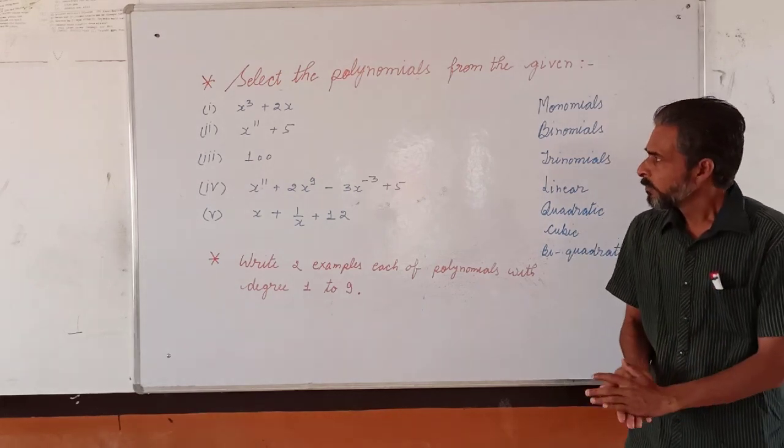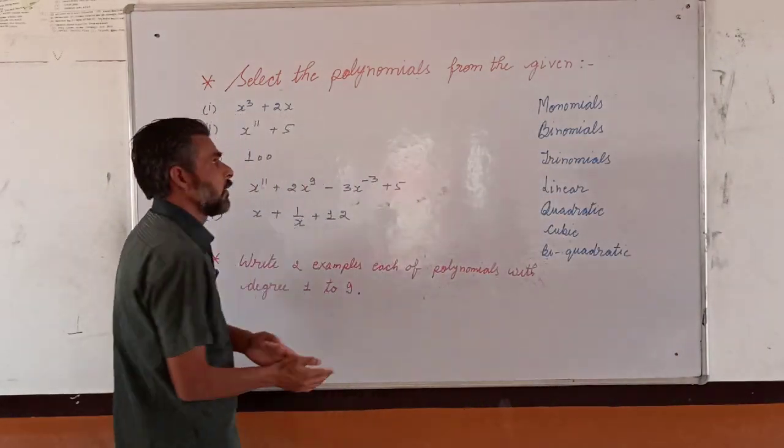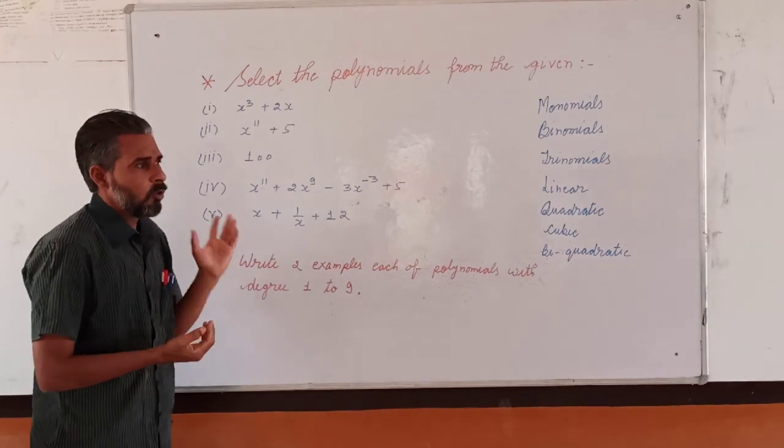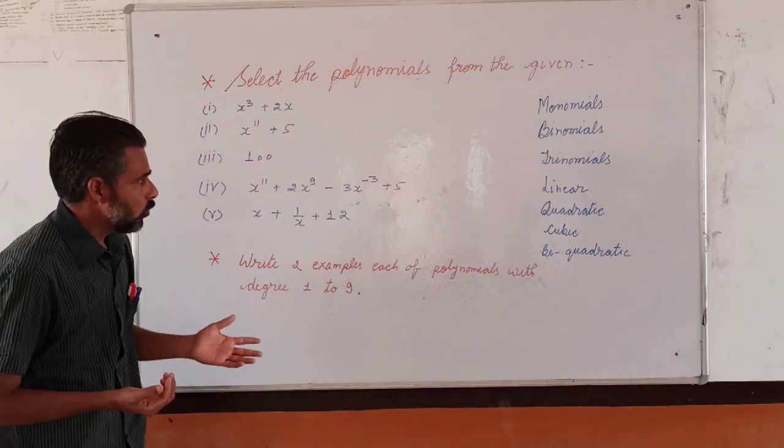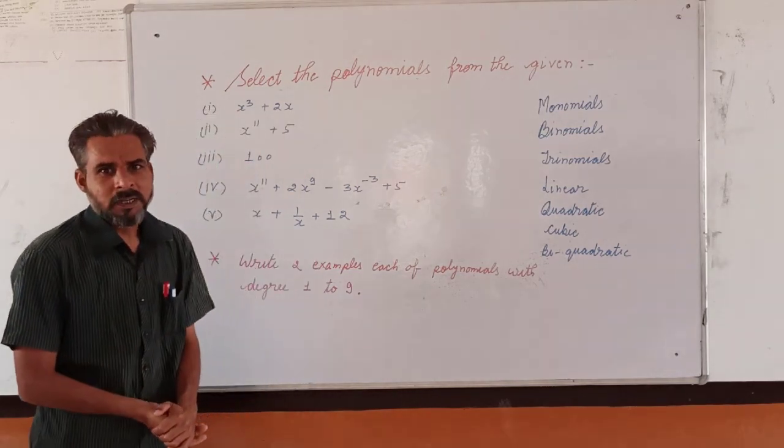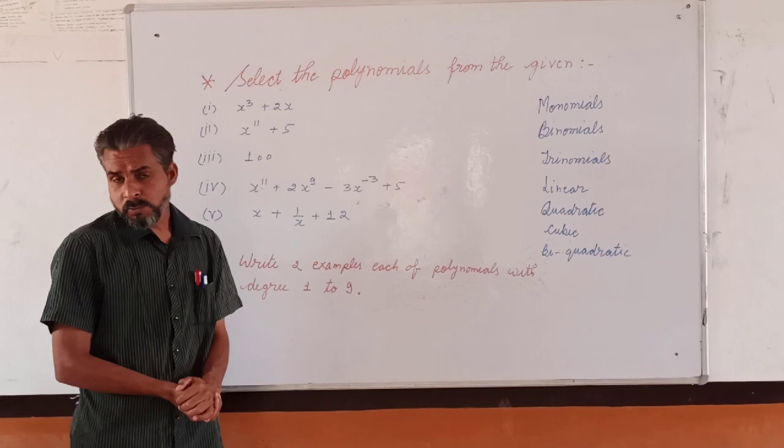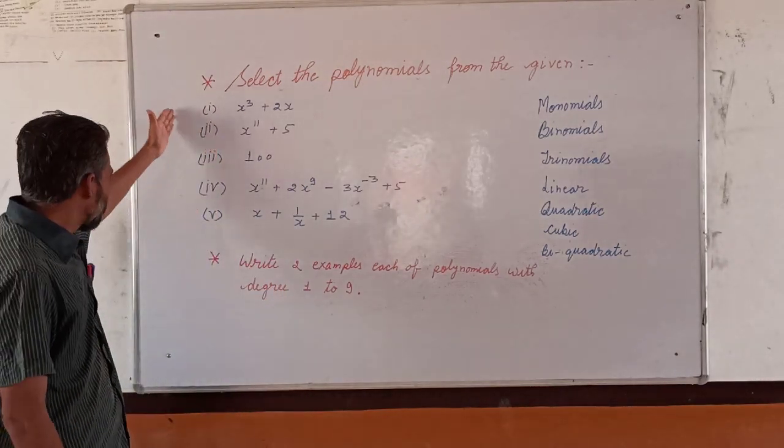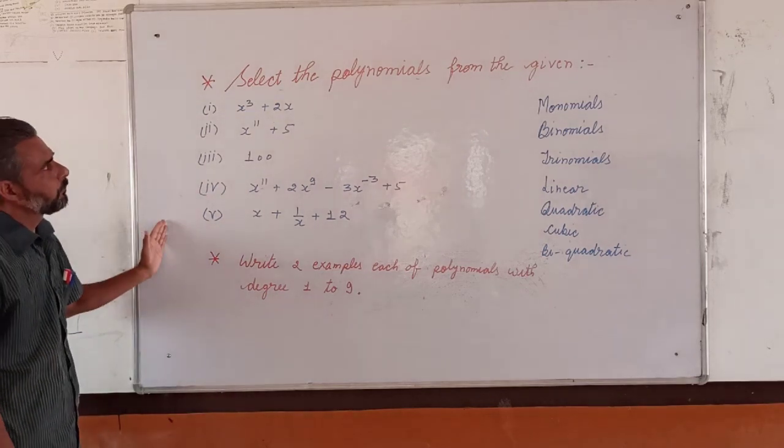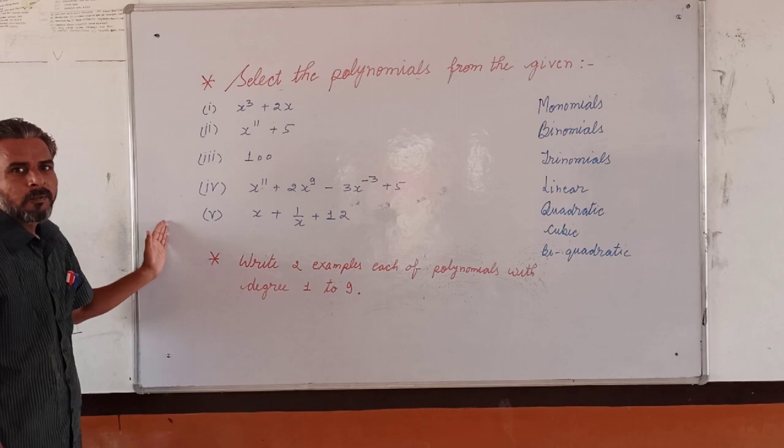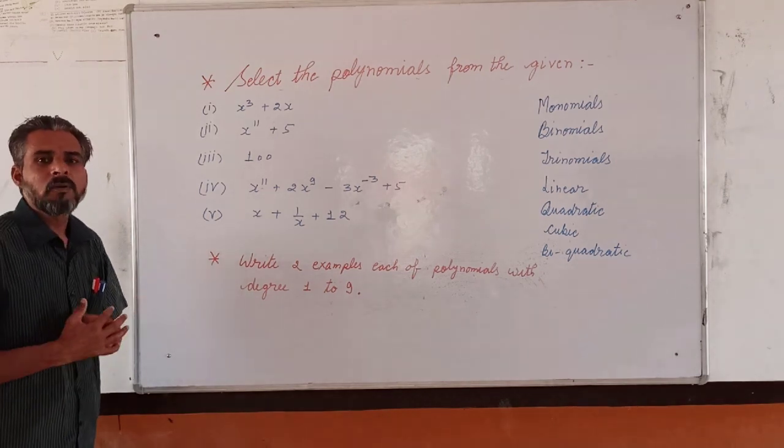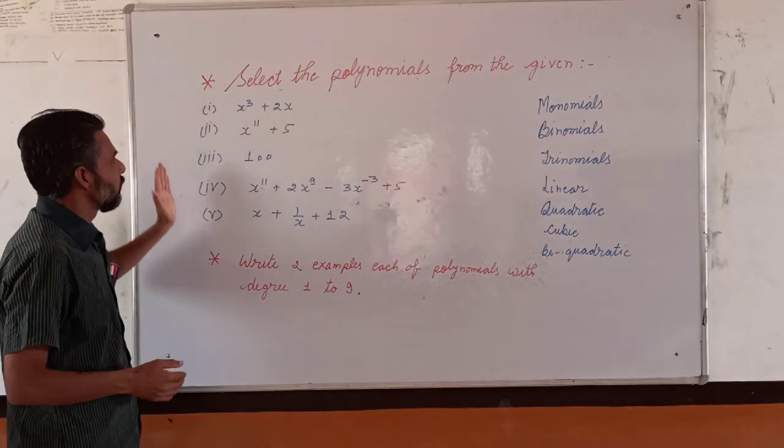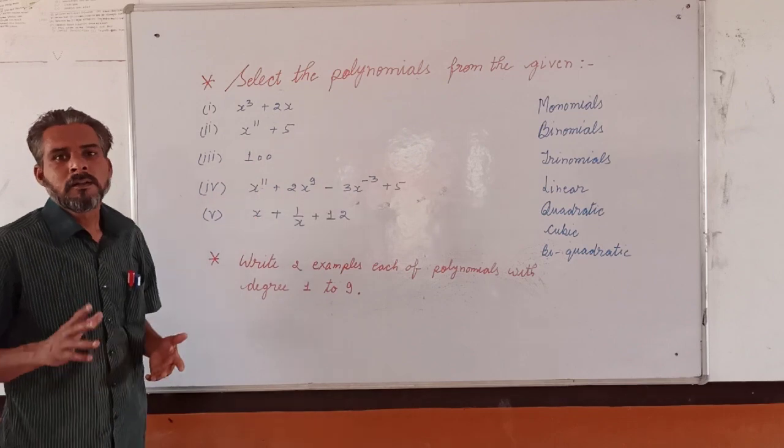So after that, as yesterday we explained regarding the polynomials, many terms, today I am providing you some questions so that I should assess whether you are learning something or not. The first one is that some polynomials are here, five polynomials are there. Out of these five, some are not the polynomials. So you are supposed to select which ones are the polynomials and which are not the polynomials.